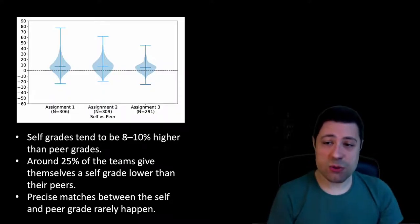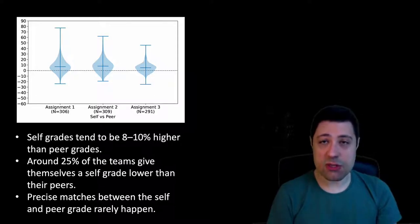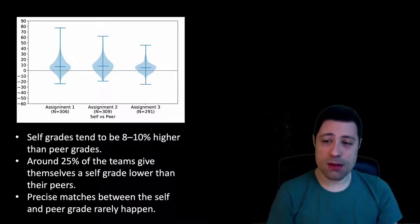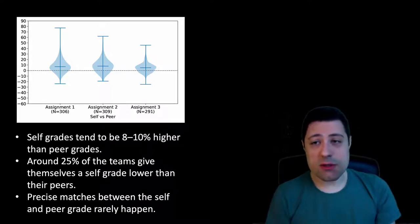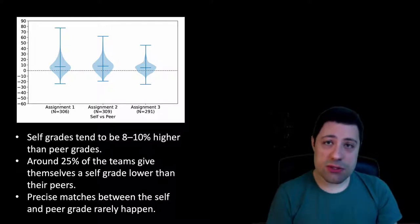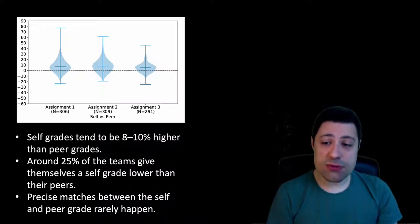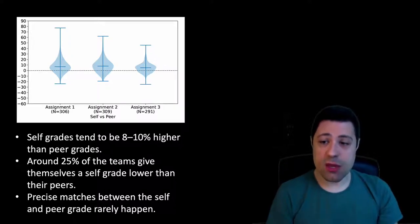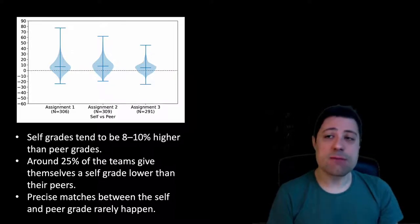For the first research question, what we observed is that on average, self grades tend to be 8 to 10% higher than the peer grades, which is quite expected — that was our hypothesis. Interestingly, around 25% of the teams gave themselves a self grade lower than their peers, which is very interesting and a point of attention in practice. Precise matches between self grade and peer grade rarely happen.